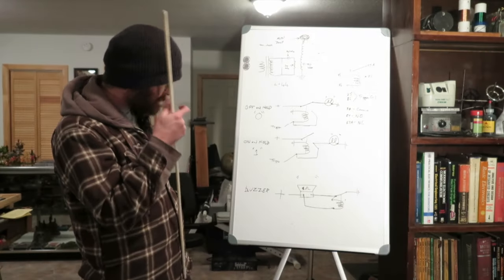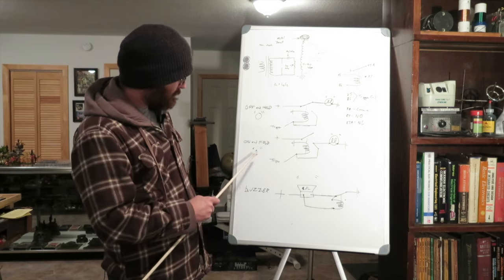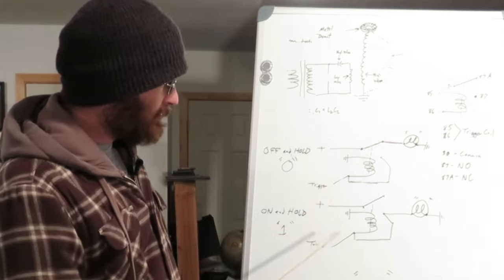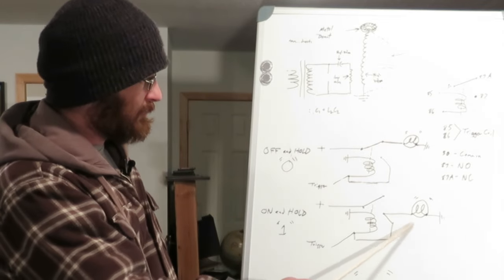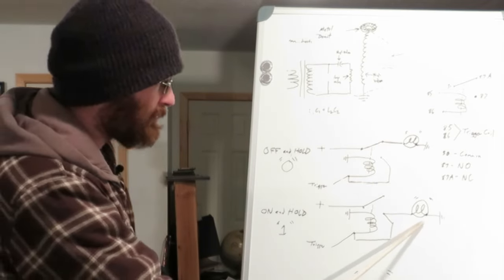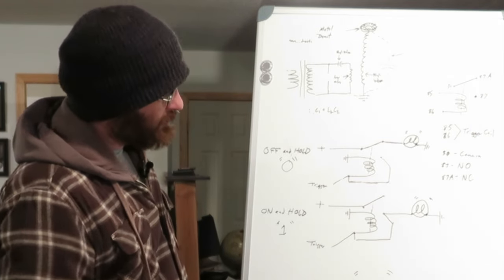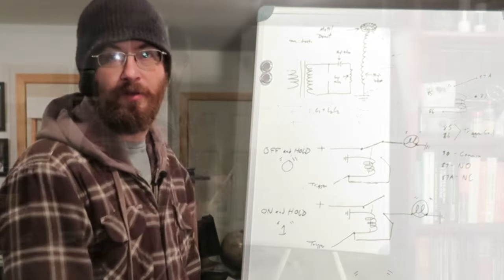Our next setup here, we've got an on and hold relay. It's a little bit like the off and hold, except I've changed where the load hooks up. And basically when this relay is triggered, the light comes on and stays on.